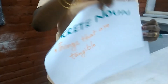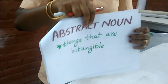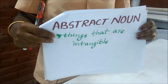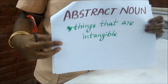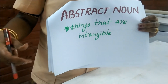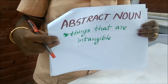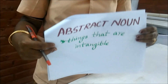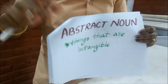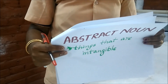The next category of noun is the abstract noun. Abstract nouns are intangible — they cannot be seen and they cannot be touched. They are basically the qualities of something, like honesty, truthfulness, and friendship. They cannot be seen or touched; they can only be felt. These are the different categories of nouns.